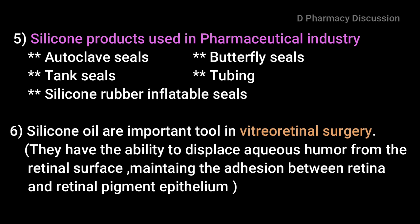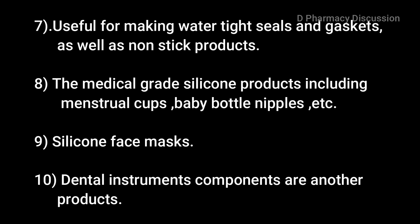Silicone products used in the pharmaceutical industry include autoclave seals, butterfly seals, tank seals, tubing, and silicone rubber inflating seals. Silicone oils are an important tool in vitreoretinal surgery because they have the ability to displace aqueous humor from the retinal surface, maintaining adhesion between the retina and retinal pigment epithelium. They are also useful for making watertight seals and gaskets, as well as non-sticky products. Medical-grade silicone products include menstrual cups, baby bottle nipples, silicone face masks, and dental instrument components.